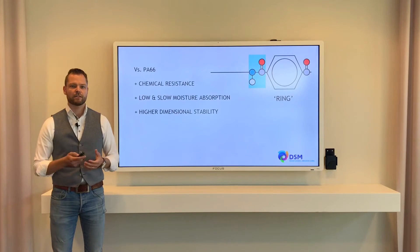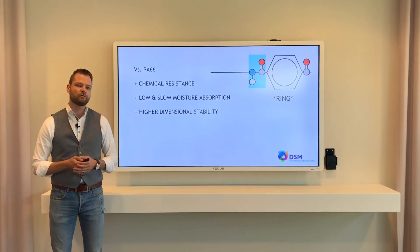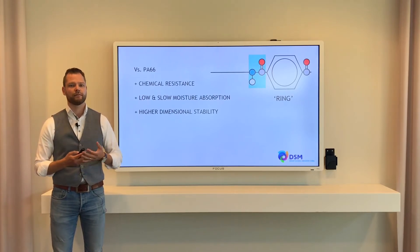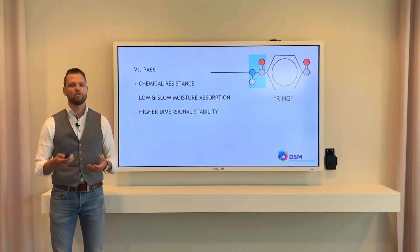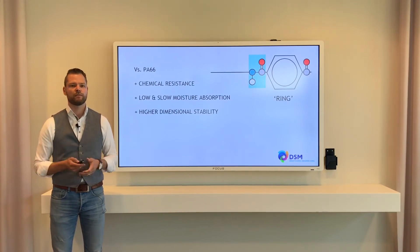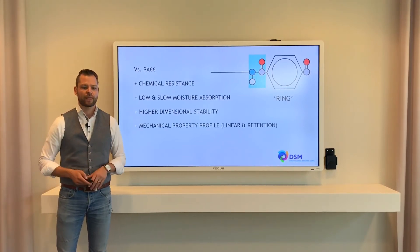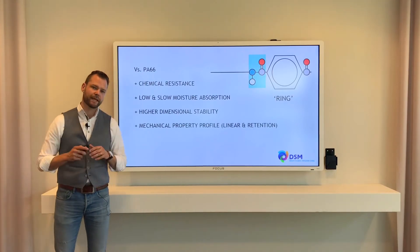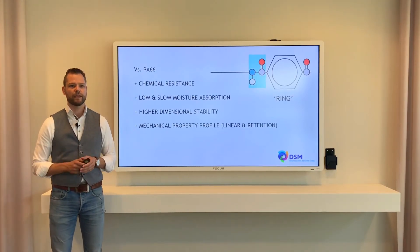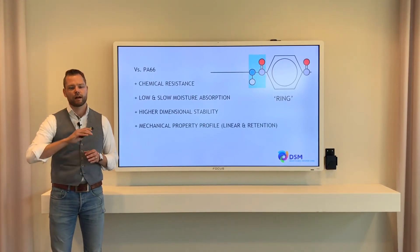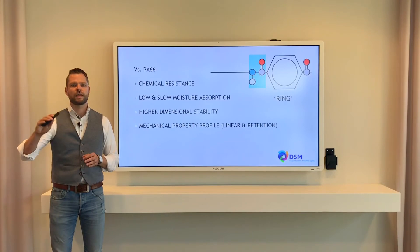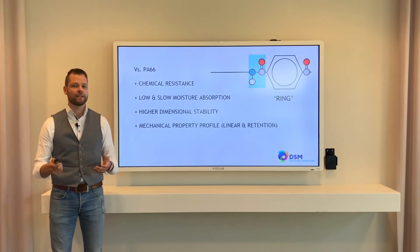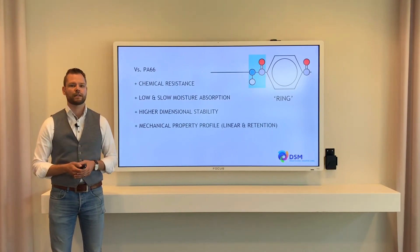The dimensional stability of a PPA is also much better than polyamide 6-6, due to this low absorption of different types of chemicals or moisture. And last but not least, the mechanical properties of a PPA are much more stable over temperature, so the retention is much better.